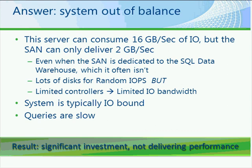Adding more workload to the same SAN impacts all data warehousing workload traditionally performed on that server. The server can consume about 16 gigabytes per second of IO, but the SAN at this juncture can only deliver about 2 gigabytes per second. Even when the SAN is dedicated to a SQL warehouse—which it often isn't—IO is really the bottleneck. Lots of disk and random IO are available, but because of the limited controllers on these SANs, throughput is limited significantly.